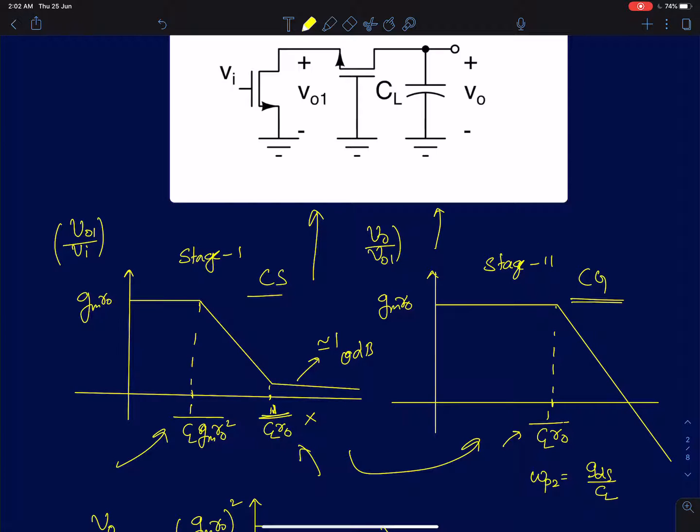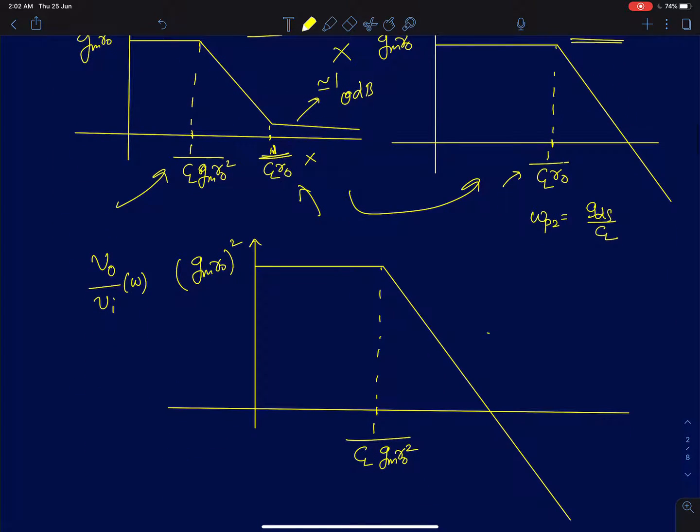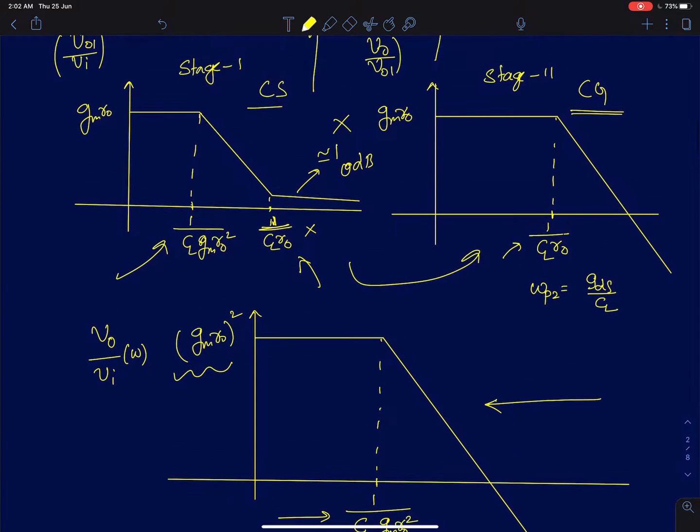To get the overall gain I just have to multiply the gain of the first and the second stages, so that gives me a frequency response that looks like this, which is the frequency response of a standard cascode amplifier. We have just one large load capacitor at the output. But what we discussed in the previous lecture is that the dominant pole actually occurs at the output of the first stage.